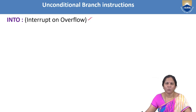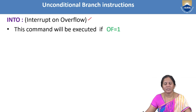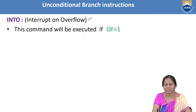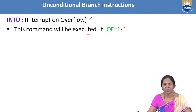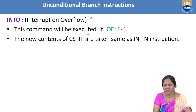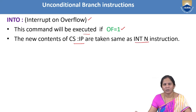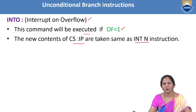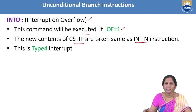The next interrupt instruction is INTO, which represents interrupt overflow. When this instruction is executed, an interrupt overflow will occur. Before executing this instruction, the overflow flag in the flag register must be set — only then will the INTO instruction be executed. The new contents of CS and IP are calculated the same way as INT N: the segment address is 0000H and the offset address is type number × 4. INTO is also called a type 4 interrupt.